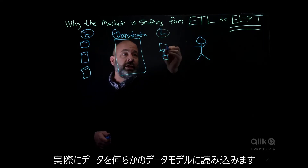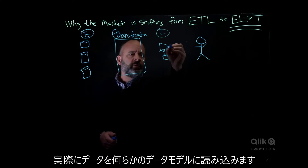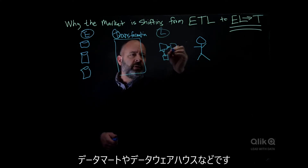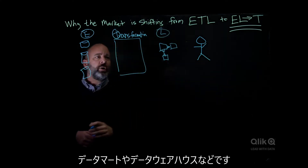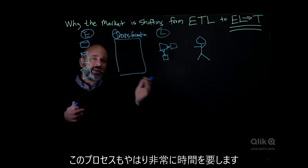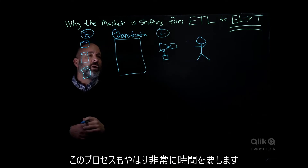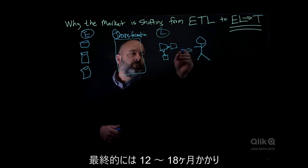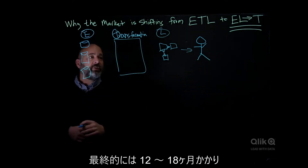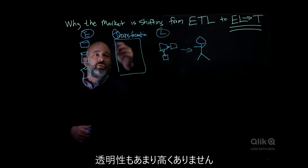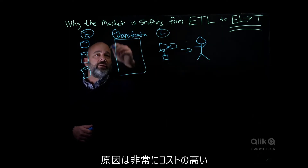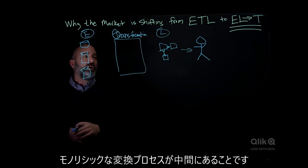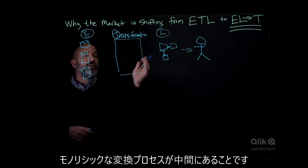From there, they're actually loading the data into some sort of data model, whether it's a data mart or data warehouse. And again, that's another very long process. Ultimately, 12 to 18 months later, with not a lot of transparency because you have a very expensive monolithic transformation part in the middle.